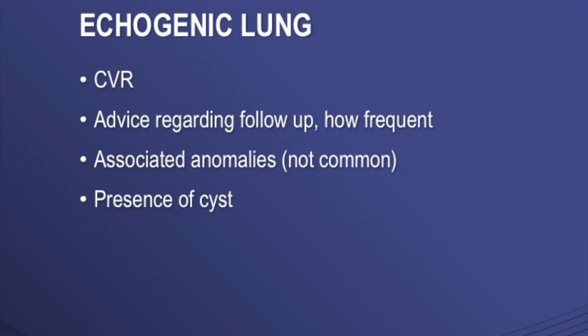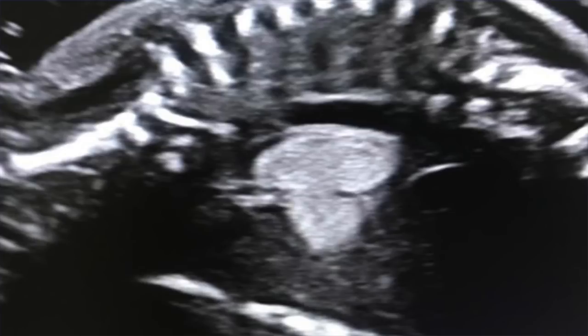You should also assess the vascularity of the lesion, which is very important to differentiate between CCAM and pulmonary sequestration. You should give a CVR — the ratio which we will see later. Then the most important thing is the advice regarding follow-up: how frequently you should follow up these lesions.